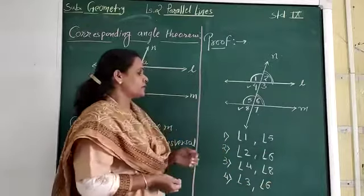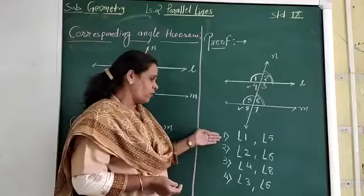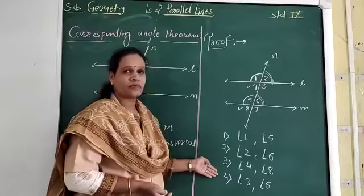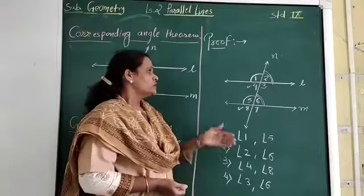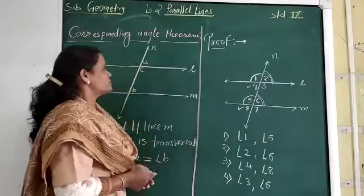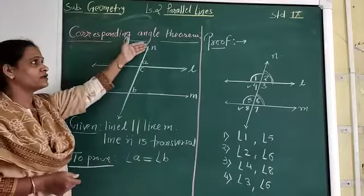So here children, we have seen how many corresponding angle pairs are forming. There are 4 corresponding angle pairs which are congruent to each other. So here, in today's session, we are going to see the corresponding angle theorem.